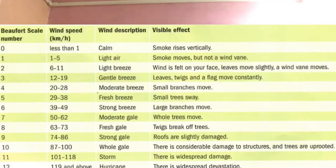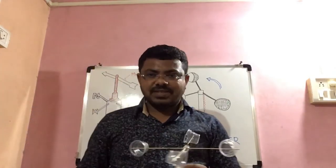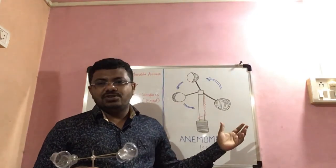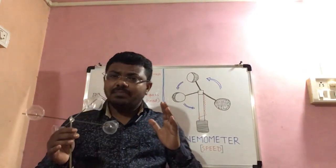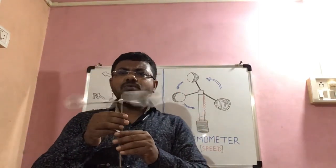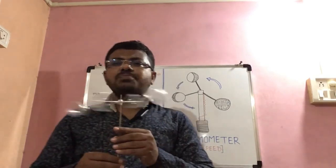There is a scale known as the Beaufort scale, which is used to identify what kind of wind was blowing — whether the wind was calm, whether there was a slight breeze, or whether the wind was stormy. That information can be obtained through this scale. This is how the anemometer is used; the mechanism is very simple. The cup rotates, the wire is connected to the meter, and the meter keeps recording the speed.